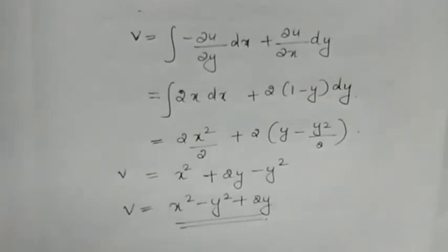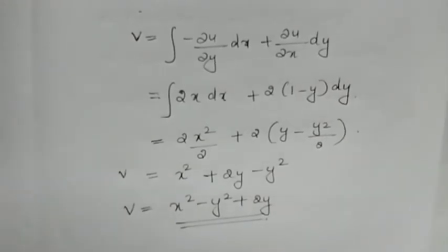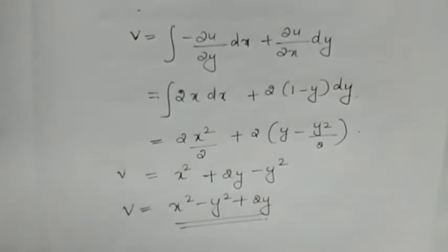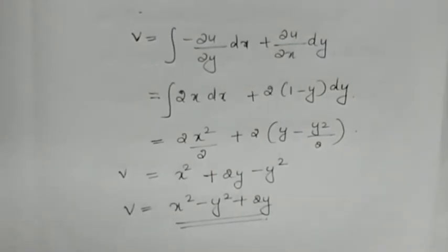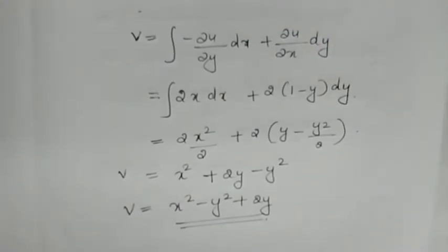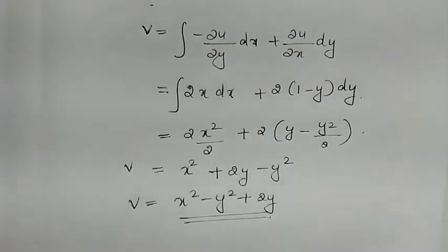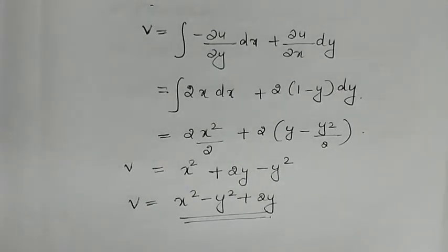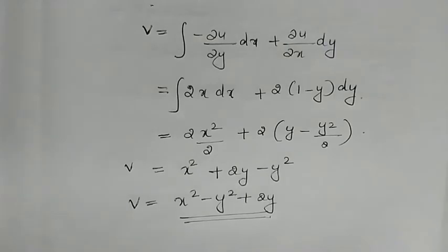To summarize: the harmonic function condition is ∂²u/∂x² + ∂²u/∂y² = 0, or ∂²v/∂x² + ∂²v/∂y² = 0. We have discussed conjugate functions and harmonic functions, and solved problems using both topics. Thank you.